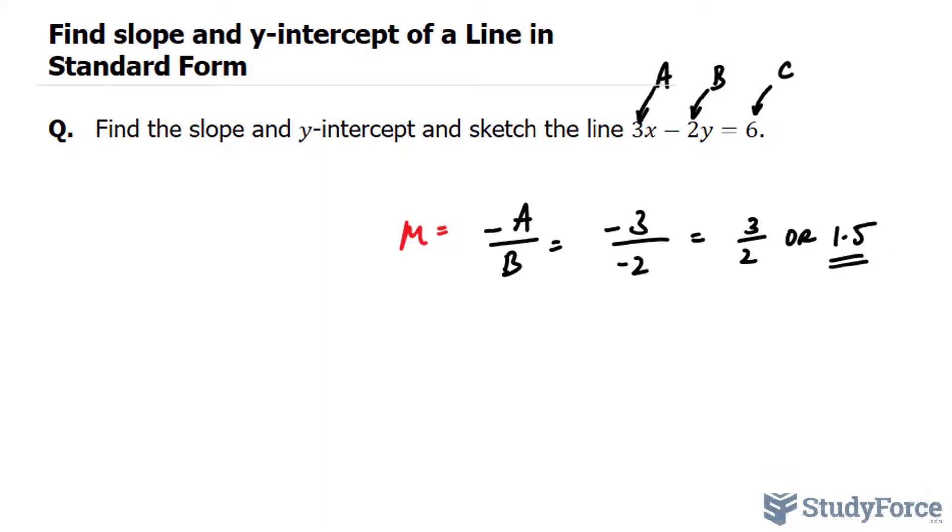If you want to find your y-intercept really quickly when it's in standard form, just use this formula. So I'll denote the y-intercept as the letter b, and you take the constant C and divide it by B. So we have 6 divided by negative 2. 6 divided by negative 2 is negative 3. And that's it.